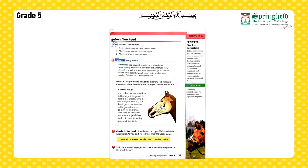Read the paragraph and look at the diagram. Talk with your classmates about how the visual helps you understand the text. A horse has two sets of teeth in its lifetime, just like you do — it loses its baby teeth during the first few years of its life and then gets a permanent set. Unlike you, a horse has 40 teeth; you have 32. They have 24 premolars and molars to grind down food, 12 incisors for tearing, and more.